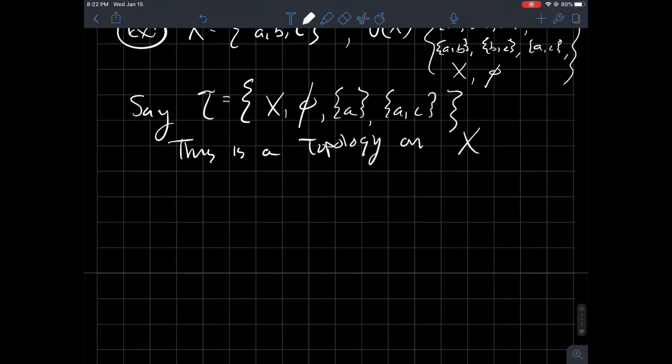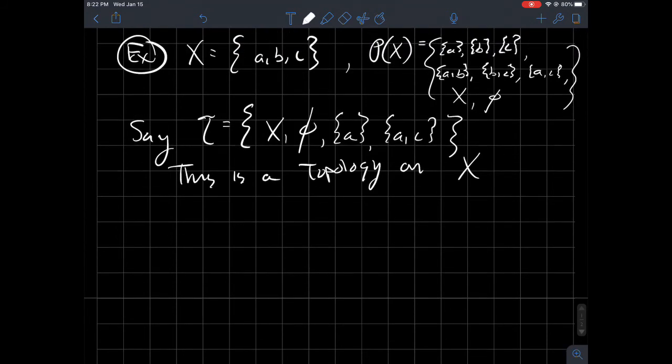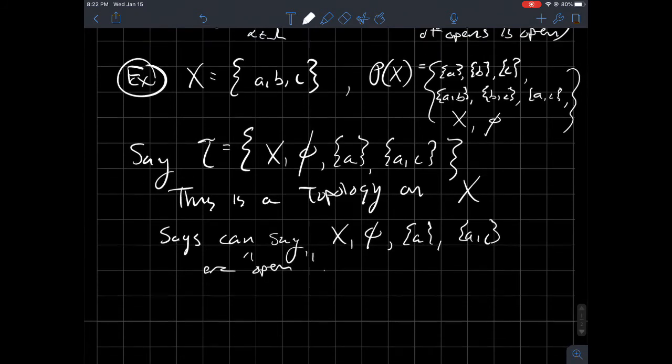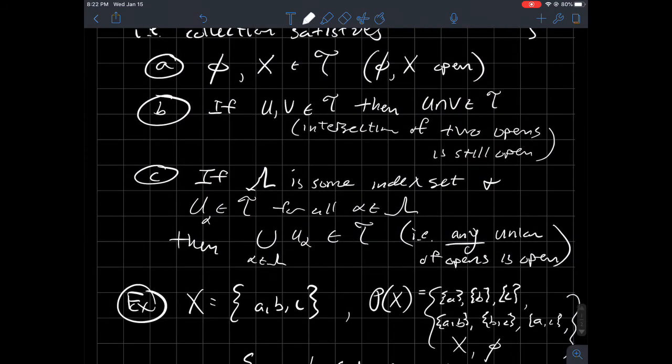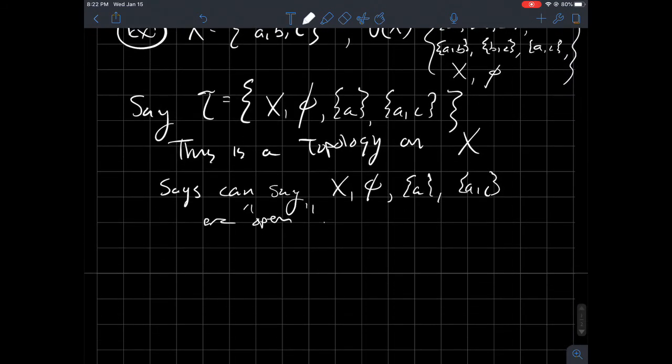Topology on X. So what does that mean? Again, what am I saying to you? I'm saying to you that I'm going to describe the things in T as open sets. So this says, you can say, X, empty set, A, AC, R, open. It's all we're saying. So open again, it's this vague, weird term, but what does it mean? That just means that the sets in your collection that you're calling open, they should just satisfy these three properties here. And we just verified that that is the case.